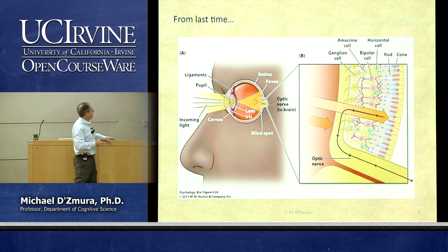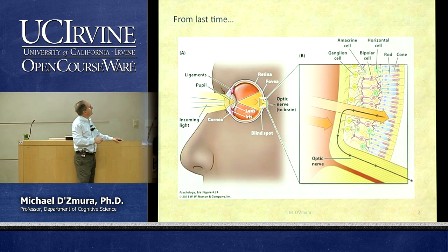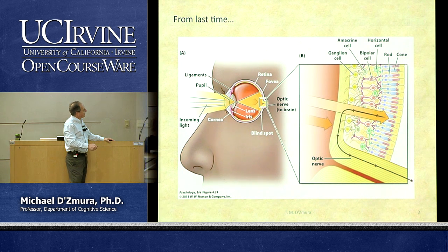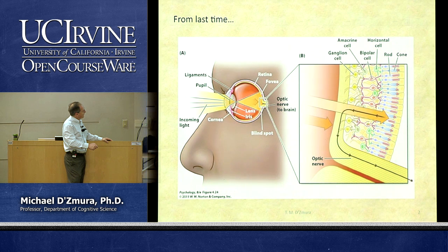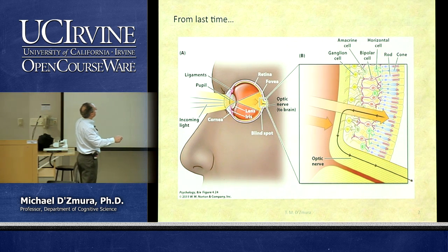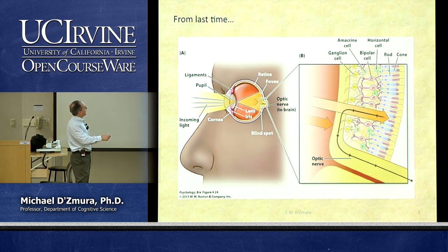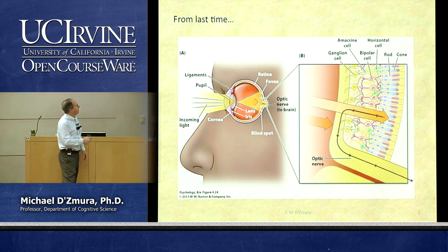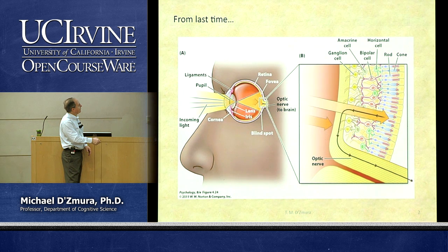We get a focused picture of the world falling on the retina at the back of the eye. The retina has layers: photoreceptor cells — rods and cones — then bipolar cells that transmit information from the rods and cones to the ganglion cells. We also have horizontal and amacrine cells that spread information laterally.